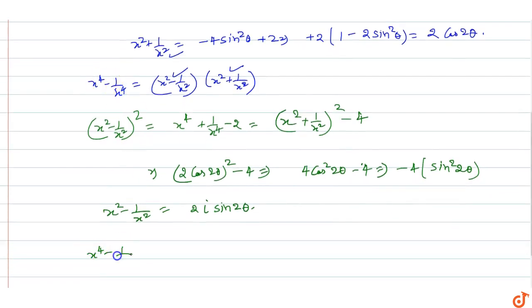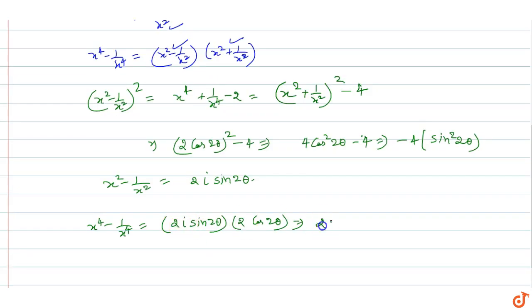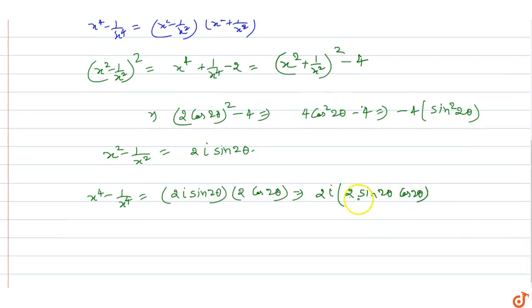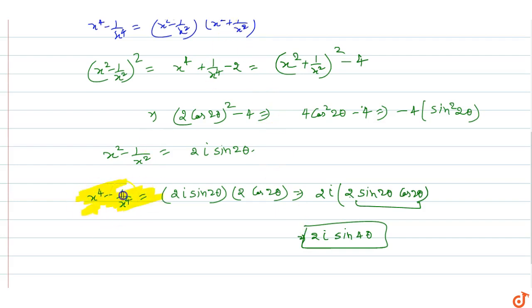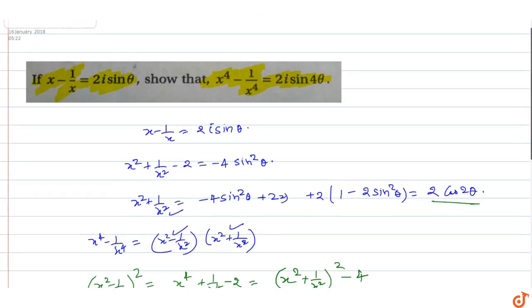Therefore, x⁴ - 1/x⁴ = (x² - 1/x²)(x² + 1/x²) = 2i·sin2θ × 2cos2θ = 2i·(2sin2θ·cos2θ) = 2i·sin4θ. So x⁴ - 1/x⁴ = 2i·sin4θ.